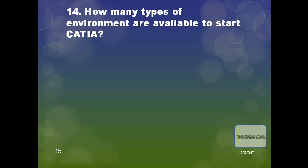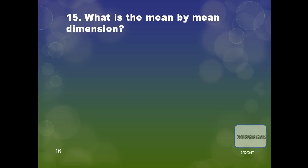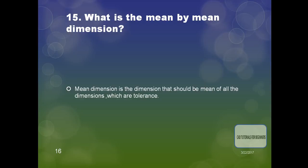The next question is: how many types of environment are available to start CATIA? There are two types of environment: the first is the Windows desktop (MOTIF) and the second is from the console, which is the terminal.